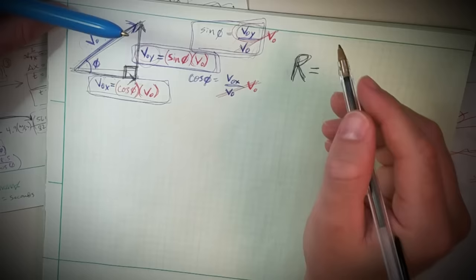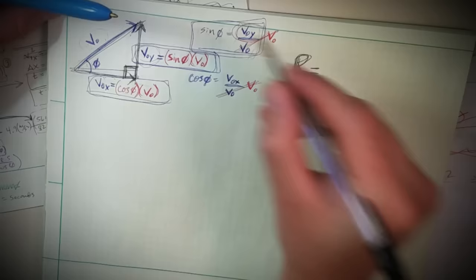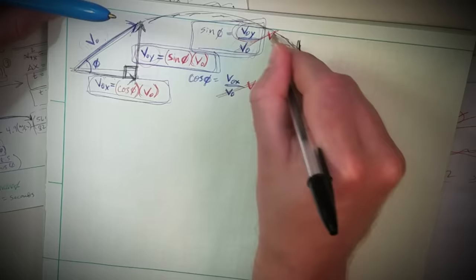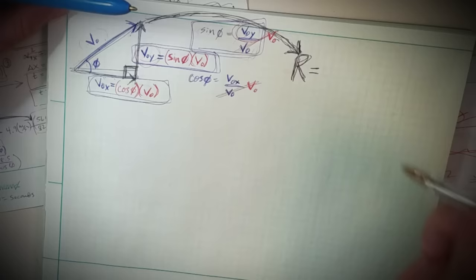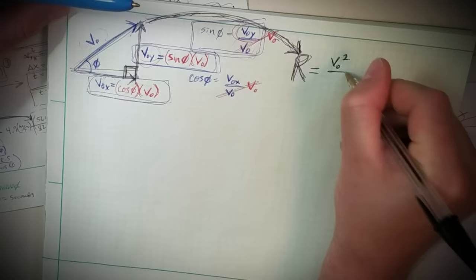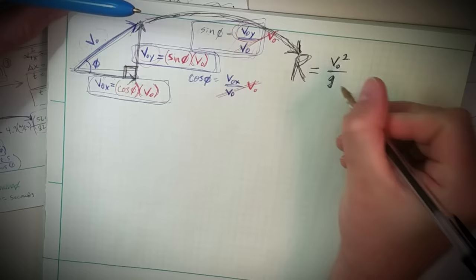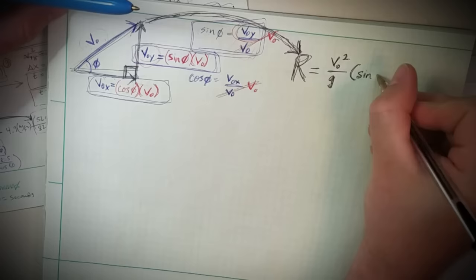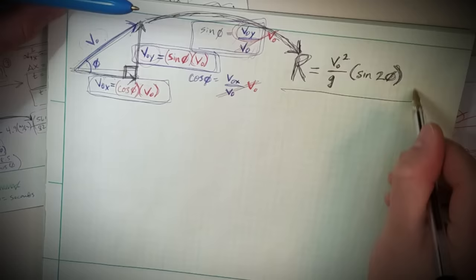The range - or the distance a projectile can travel in terms of its initial velocity and initial angle of projection - is going to be the initial velocity squared divided by gravity, the gravitational acceleration, times the sine of twice the angle theta. So R = v₀²/g × sin(2θ). That was the crucial piece of information I didn't quite have.